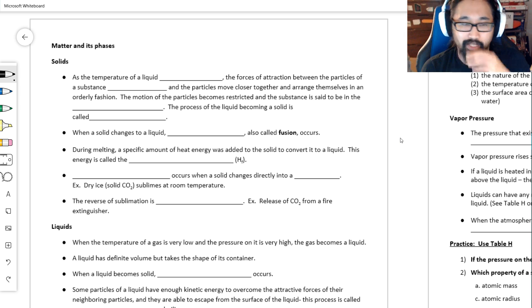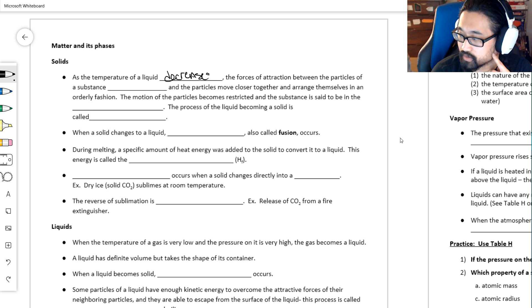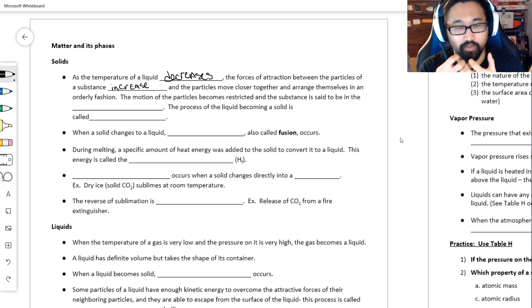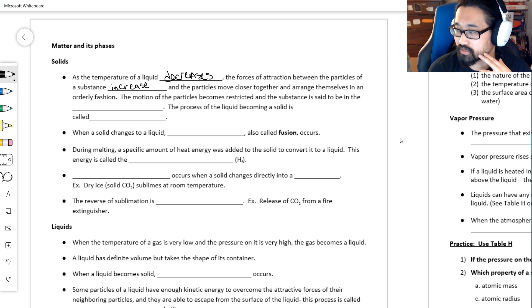So matter and its phases. As the temperature of a liquid decreases, the forces of attraction between the particles of a substance actually increase. As the particles start to move slower, they get more attracted to each other because they can spend more time with each other. The particles move closer together, they arrange themselves in an orderly fashion, the motion of the particles is restricted. We say it's in the solid phase.